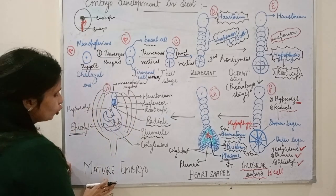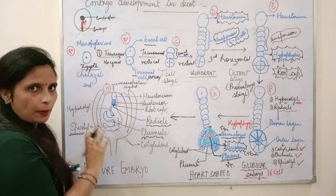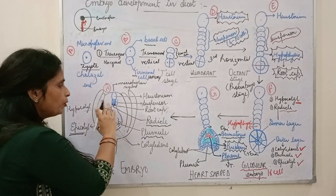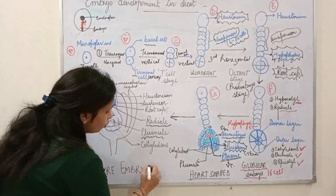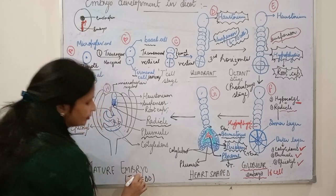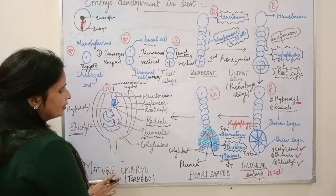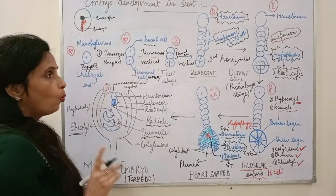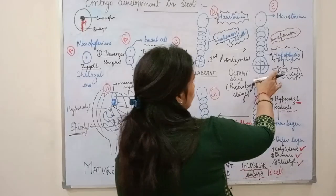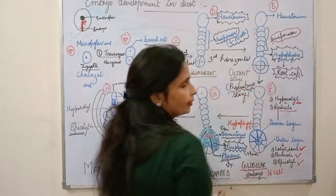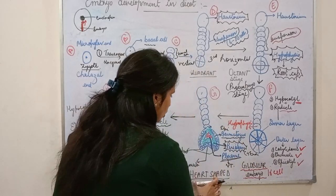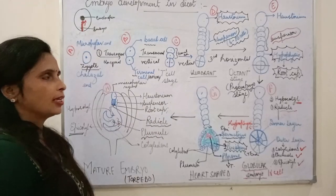That is a mature embryo. In the case of Capsella, where the ovule is curved, the embryo is also curved — in that case the mature embryo is named as torpedo. That is a special case in Capsella. In all other cases it is called the mature embryo. The order of embryo development to remember is: octant stage (pro-embryo) → 16-cell globular stage → heart-shaped stage → mature embryo stage.